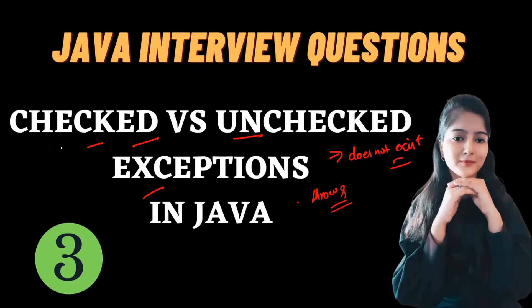For example, when you're going to attend an exam, you always make sure you have your admit card. You check it again and again because the chances of forgetting it are high, and without it you won't be allowed to sit. That's why you're very cautious — you check that your pen, pencil, and all needed resources are with you. Even your parents check whether you have everything.